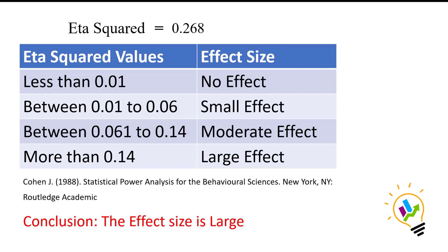Using the interpretation table: if eta squared is less than 0.01, there is no effect size; between 0.01 and 0.06 is small; between 0.061 and 0.14 is moderate; and greater than 0.14 is a large effect size. Since our eta squared value is 0.268, we can conclude that the effect size is large. I hope this video will be useful for your research. Thank you.